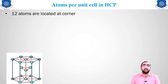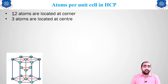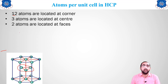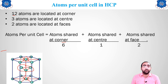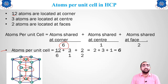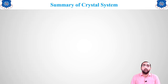For HCP: there are 12 corner atoms (6 top + 6 bottom), 3 interior atoms, and 2 face atoms. Using the modified formula with a sharing factor of 6, the atoms per unit cell equals 6.